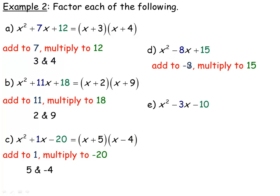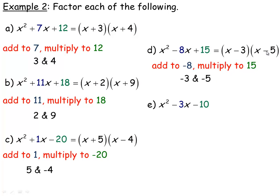So this factors into x plus 5 and x minus 4. Next: adds to negative 8 and multiplies to positive 15. When they add to a negative sum but multiply to a positive, both numbers have to be negative — a negative times a negative is a positive. The factors of 15 are 3 and 5, or 1 and 15. Negative 3 and negative 5 add to negative 8 and multiply to positive 15, so the factors are x minus 3 and x minus 5.